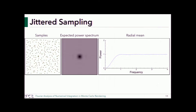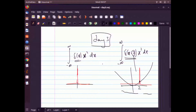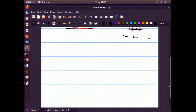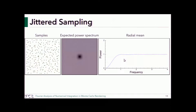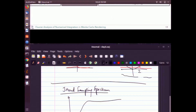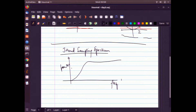When we look at the spectrum of jittered sampling, even though these are still uniform unbiased estimator samples, the spectrum has a large dark shadow in the middle around DC. In our 1D plot, there is very little energy in the low frequencies. Is that good or bad?